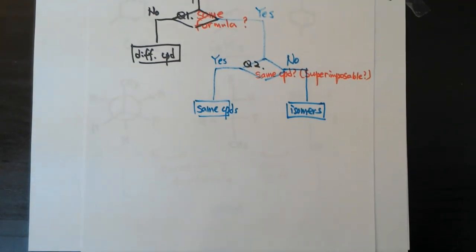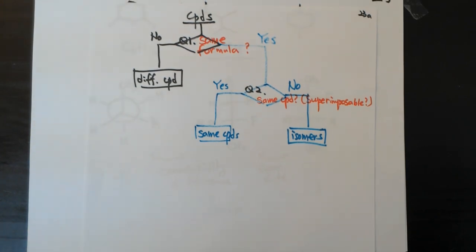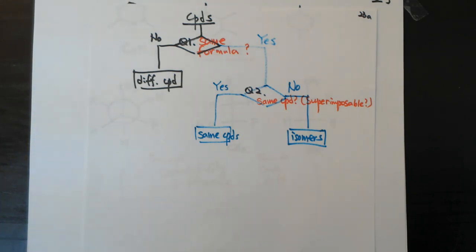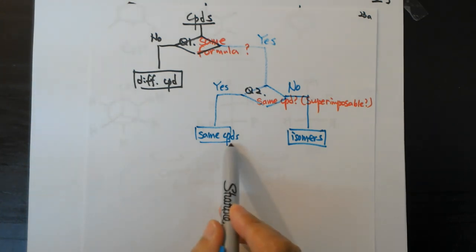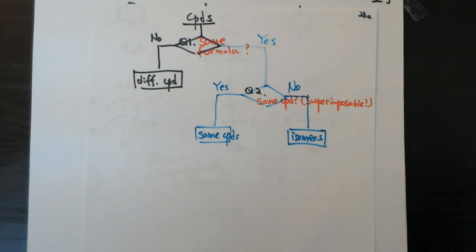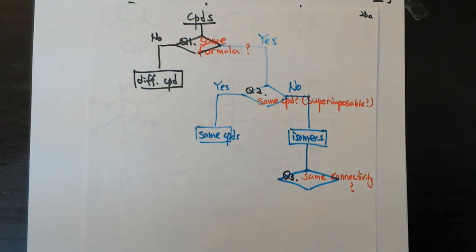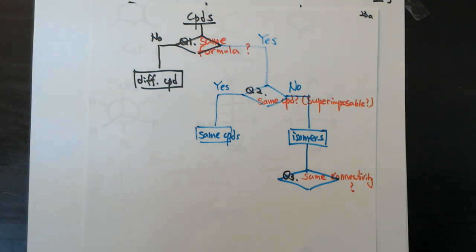To recap the decision process: first, check the molecular formula. If they share the same formula, move to question two: are they the same compound? Try to overlap them. If they are not the same compound, they are isomers. Then ask question three: do they have the same connectivity? If the connectivity differs — for example, fluorine is on different carbons — that determines the type of isomer.